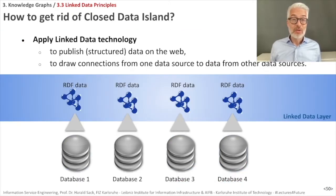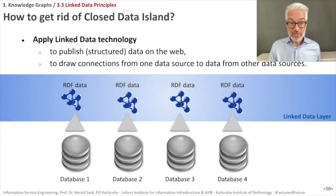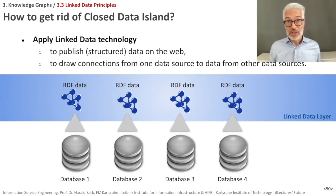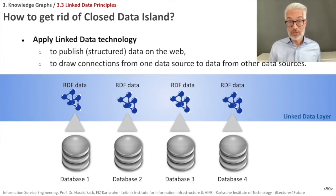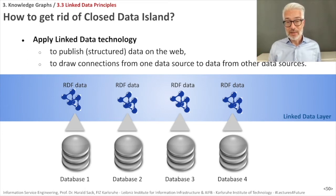If you want to get rid of these closed data islands and connect everything together, you have to apply linked data technology to publish your data on the web directly, accessible via HTTP. You can then draw connections from one data source to another, using the simplified generic API already defined by web protocols — HTTP and URI. The way data is delivered is always in the same format: RDF, a generic format. You don't need to know the exact table structure; you get back generic RDF data and derive meaning from the data itself. This is how linked data really works.